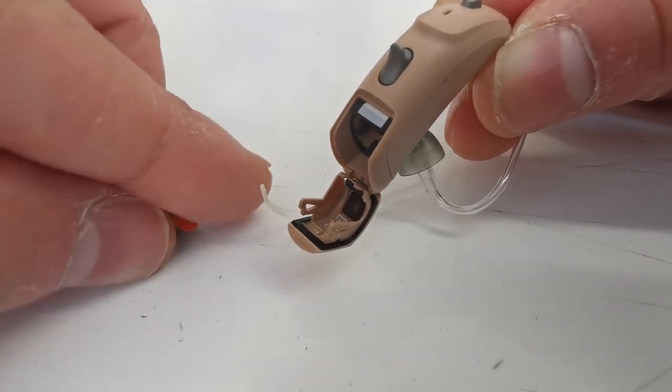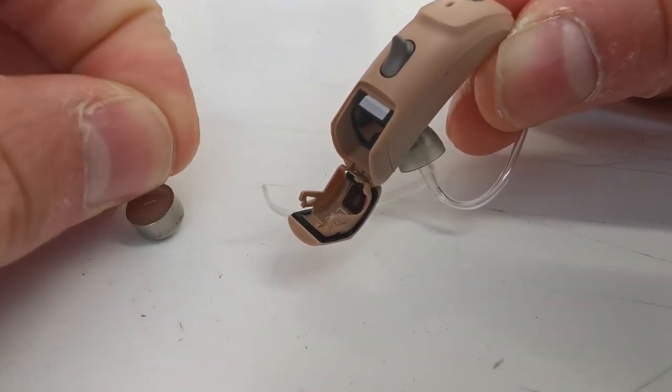You peel off the orange tab to reveal the positive side of the battery.